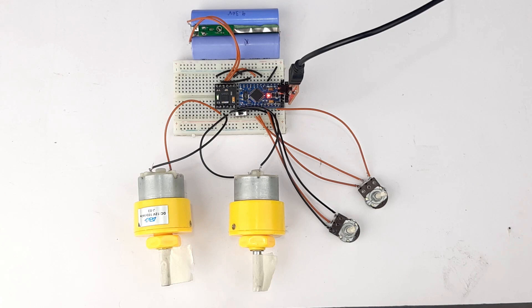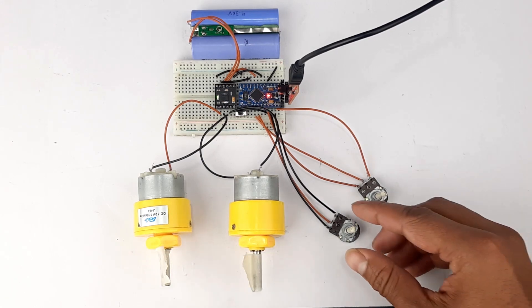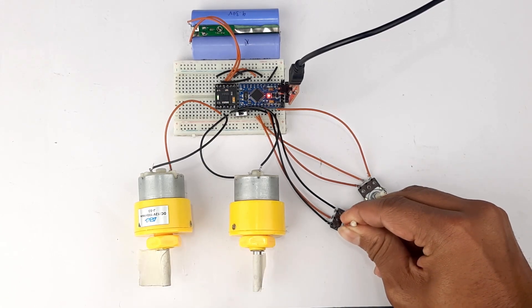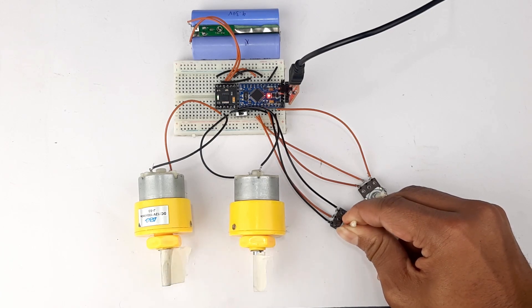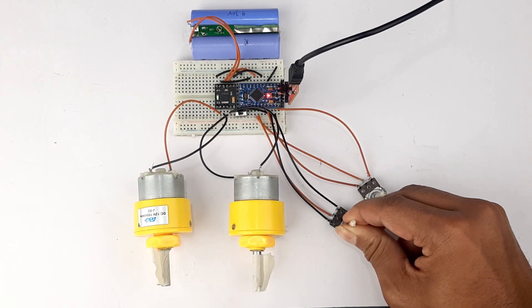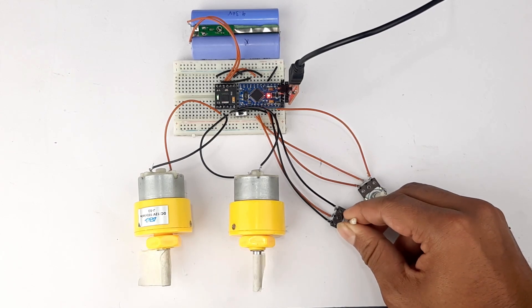As you can see the motors are spinning. If I turn the potentiometer you can see that the speed of the motor is increasing. These are 30 RPM motors powered by 8.4 volt cells.